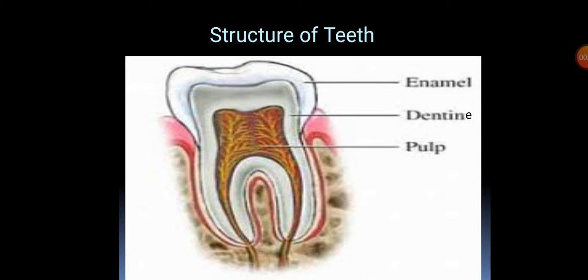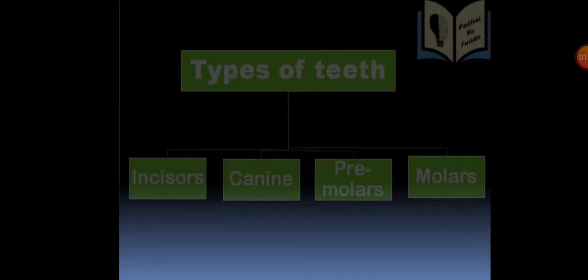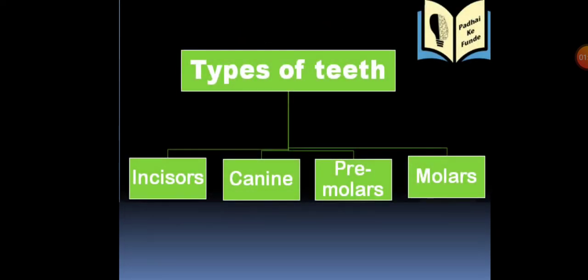Enamel forms the shining white part of the crown of the teeth. It is deposited on the surface of the crown of the tooth. Enamel is the hardest substance in our body — it is even harder than bones.